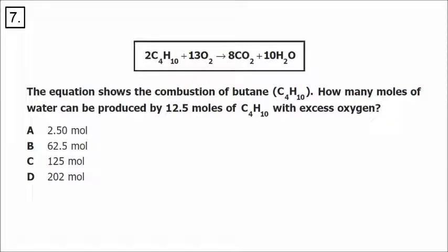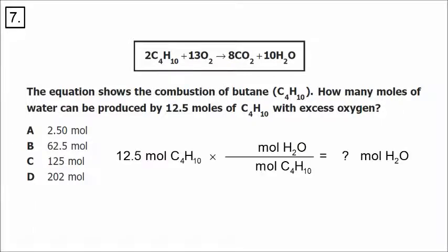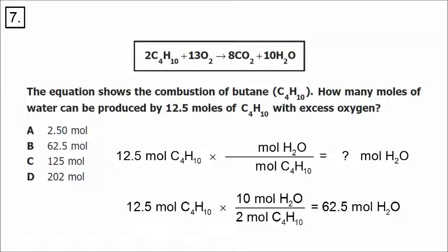Here we have a balanced equation for the combustion of butane, C4H10, and we are trying to figure out how many moles of water can be produced starting with 12.5 moles of butane. This is a one-step conversion using the coefficients in the balanced chemical equation, not the periodic table. We put moles of butane on the bottom and moles of water on the top. There are 10 moles of water produced for every 2 moles of butane consumed. 12.5 times 10 divided by 2 gives us 62.5 moles of water.